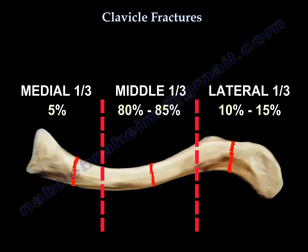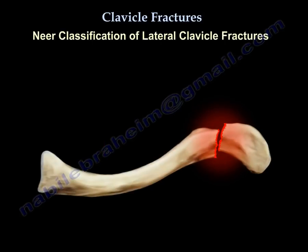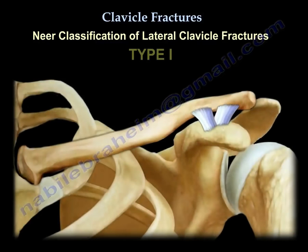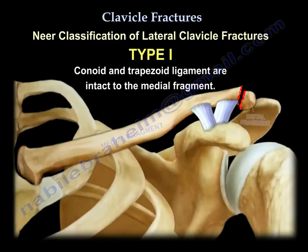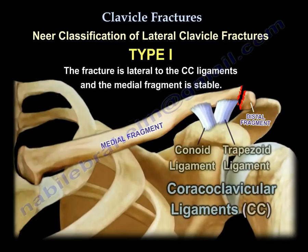The lateral clavicle fracture occurs in about 10 to 15 percent. Neer classified lateral clavicle fractures into three types based on the integrity of the CC ligament complex and involvement of the AC joint. In Type 1, the conoid and trapezoid ligaments are intact to the medial fragment — the fracture is lateral to the ligament and the medial fragment is stable because it is supported by the ligaments.